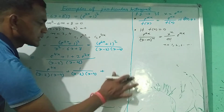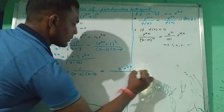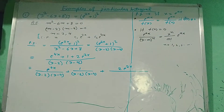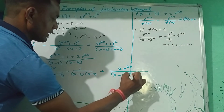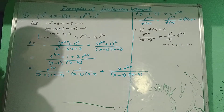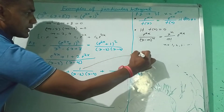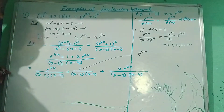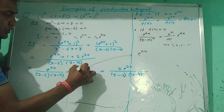In the middle part, the numerator is 1. So we can write 1 as e^(0x). At the place of 1, we can write e^(0x).